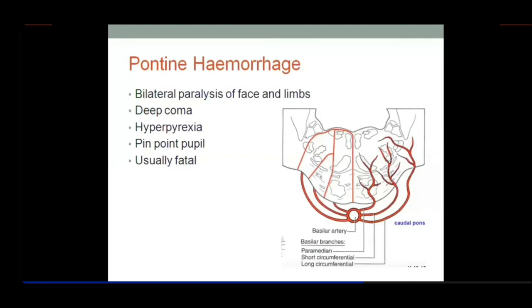Parasympathetic fibers to the constrictor pupillae reach via short ciliary nerves, while sympathetic fibers to the dilator pupillae reach via long ciliary nerves. The way to remember: constriction of the pupil is called miosis — the diameter of the pupil gets shorter, so short ciliary. Dilation of the pupil is called mydriasis, governed by the dilator pupillae, making the diameter longer — so long ciliary nerves.